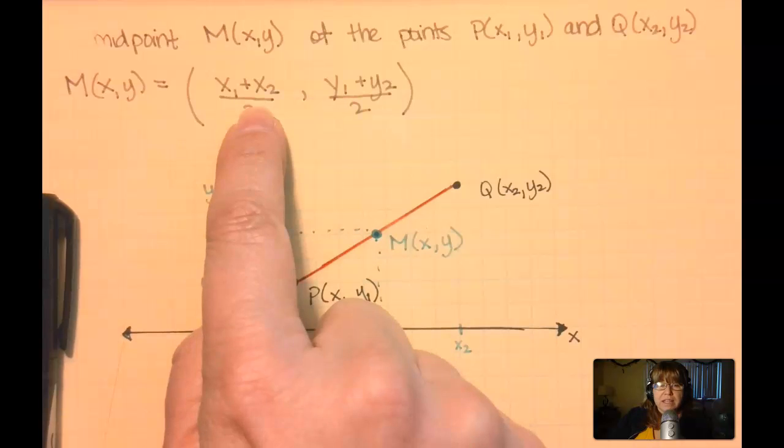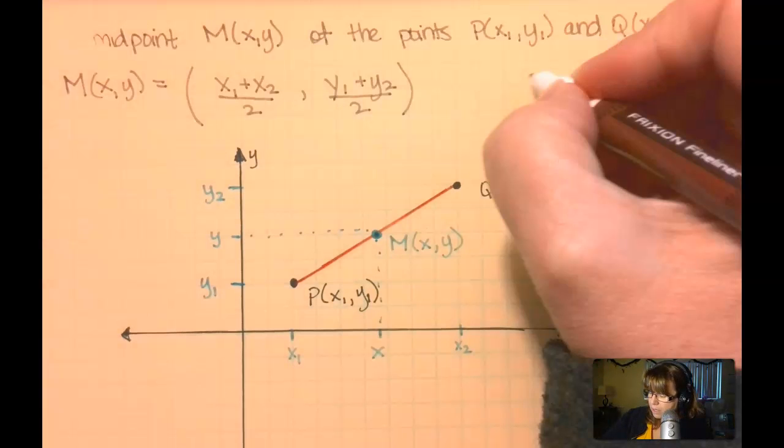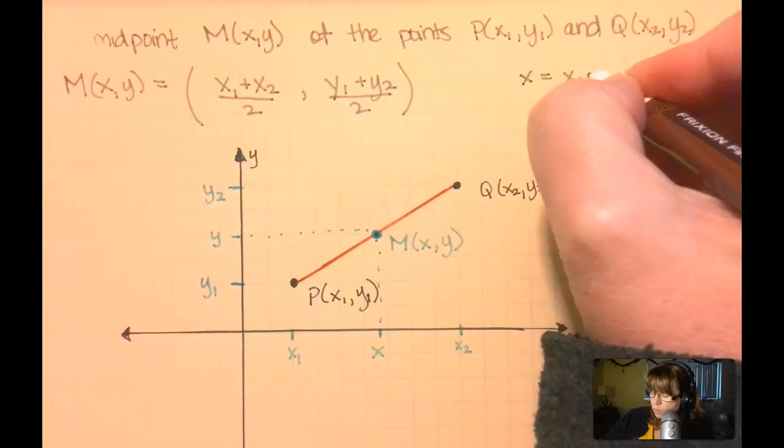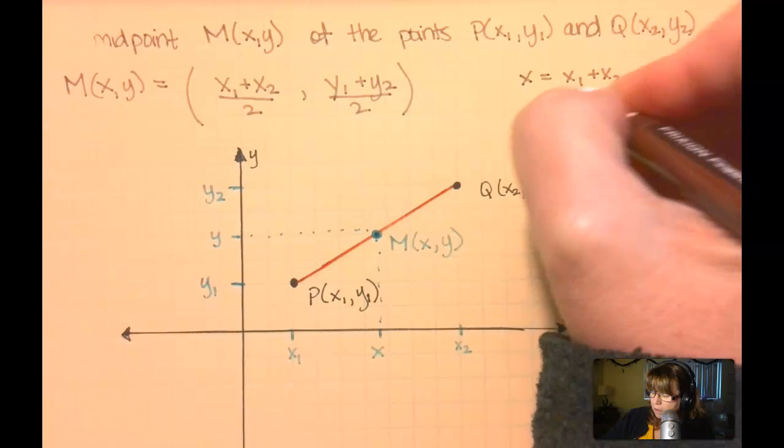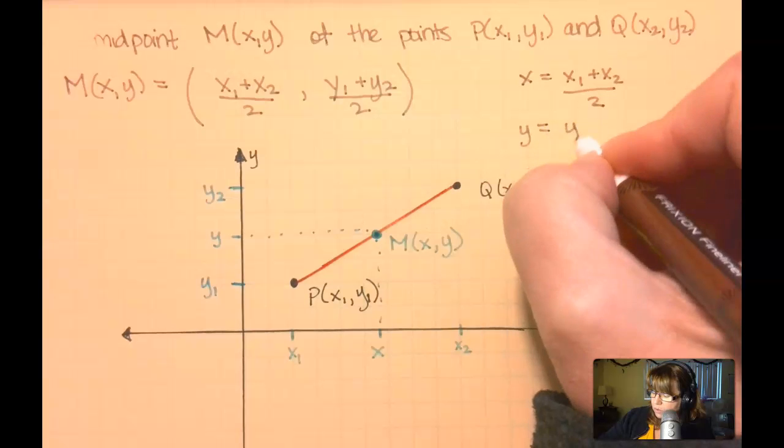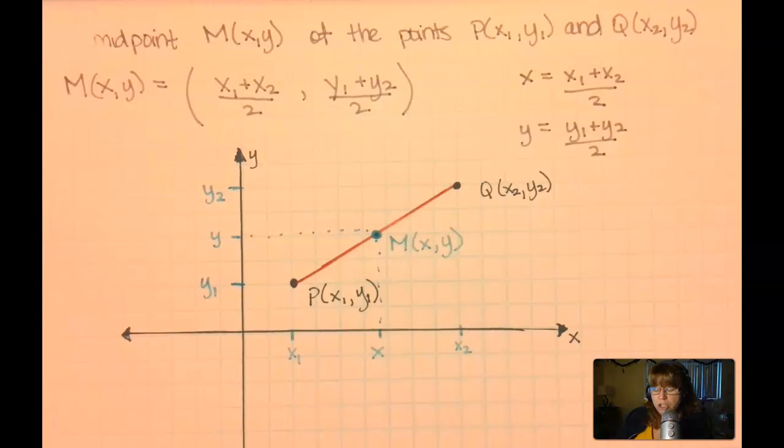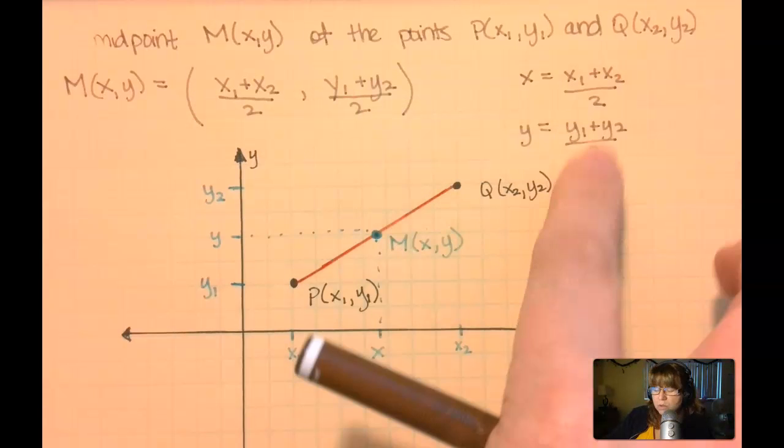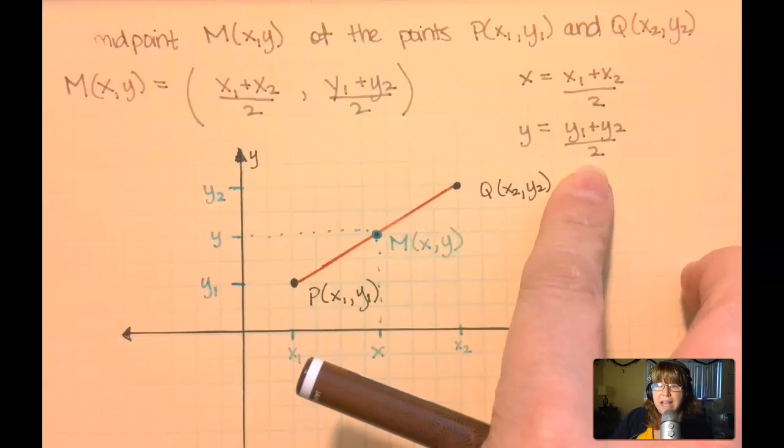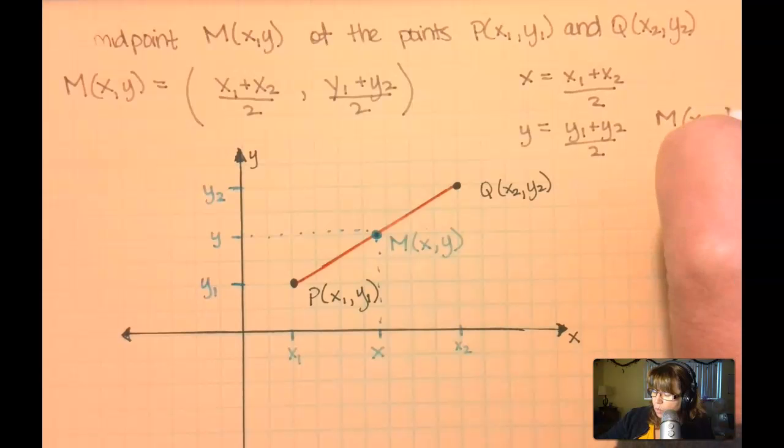If you wanted to find x, you could literally take it off to the side and say x equals x1 plus x2, all divided by 2. And y equals y1 plus y2, all over 2, if you didn't want it in the point structure itself. So you could just take those side calculations out and then ultimately put it back into a point where the midpoint is x, y.